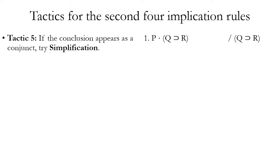Let's look at some tactics for using this second set of implication rules. One tactic: if the conclusion appears as a conjunct in one of your premises, try using simplification to derive it. For example, if you have a conjunction P dot (Q horseshoe R), and the second conjunct is what you want as your conclusion, you can use simplification to simplify out that second conjunct. Remember, simplification can be used on either the first or the second conjunct in a conjunction.